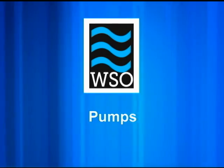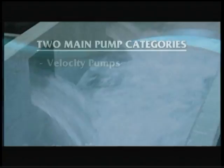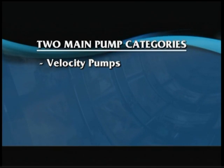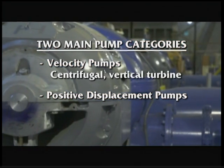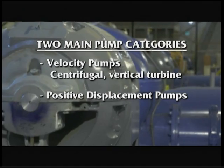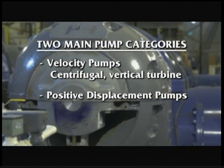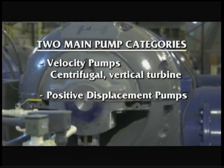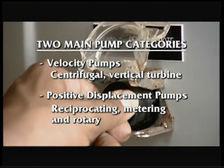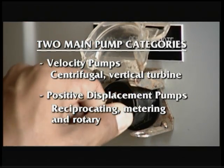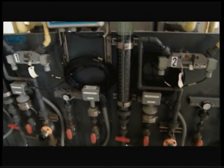The two main categories of pumps used in water supply are velocity pumps and positive displacement pumps. Velocity pumps, including centrifugal and vertical turbine, are used for most distribution system applications. Positive displacement pumps, including reciprocating and rotary, are used for moving abrasive or harmful materials and metering chemical feed systems.